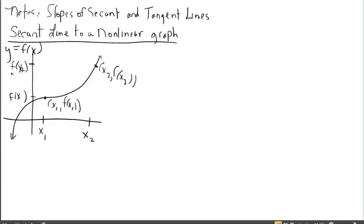Now the secant line through these two points — if you have a straight edge, you might want to take a ruler, your ID, or any other straight-edge device and connect these two points. We're looking at the average rate of change, the average change from x sub 1 to x sub 2. Without a straight edge I'll do the best I can drawing a secant line through these two points. That's a graphical representation of the average rate of change from x sub 1 to x sub 2.